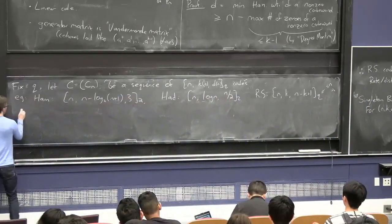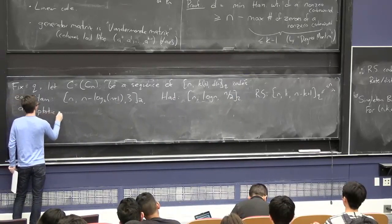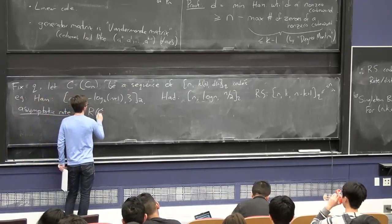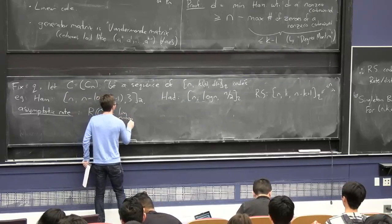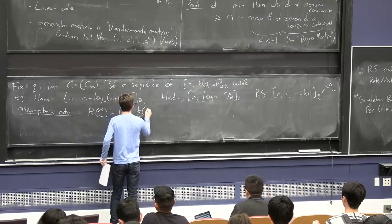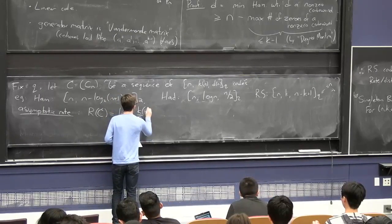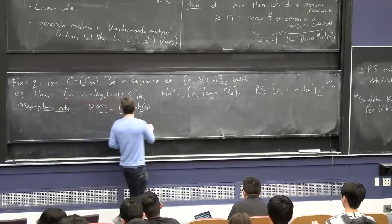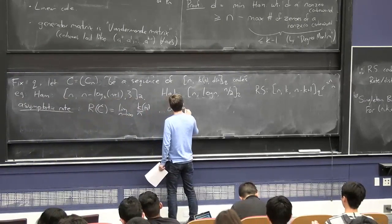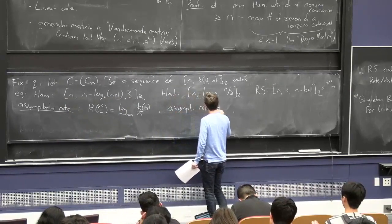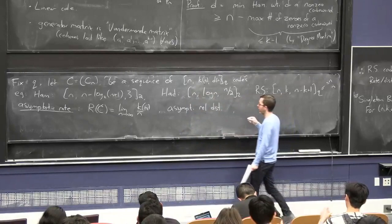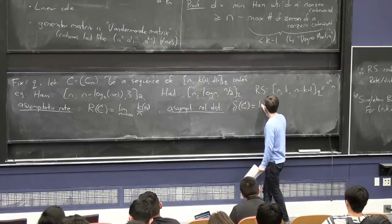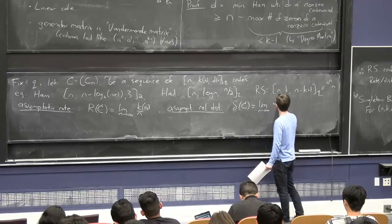But one thing we want to look at is the asymptotic rate of this code family, r of C. It's just the limit as n goes to infinity of k over n. And strictly speaking, you should put lim inf if you're a math nerd, but let's just call it the limit. And also, you have the asymptotic relative distance. So relative distance just refers to distance over n, the fractional minimum distance, that's written delta of C, which is the limit as n goes to infinity, this minimum distance over n.